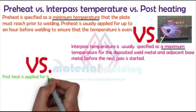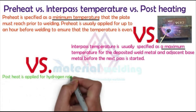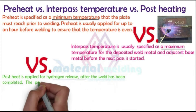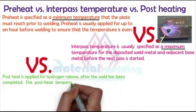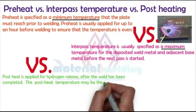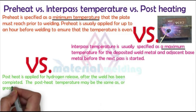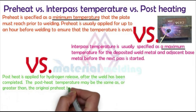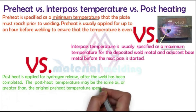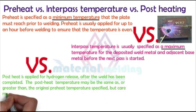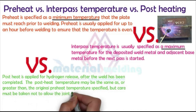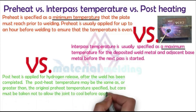Looking at post-heating, it is applied for hydrogen release after the weld has been completed. The post-heat temperature may be the same as or greater than the original preheat temperature specified. But care must be taken not to allow the joint to cool before applying the post-heat, if needed.